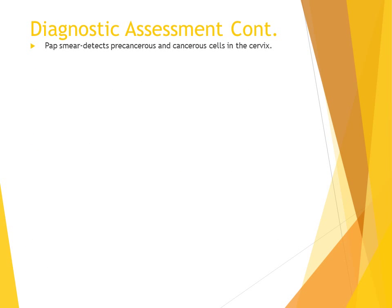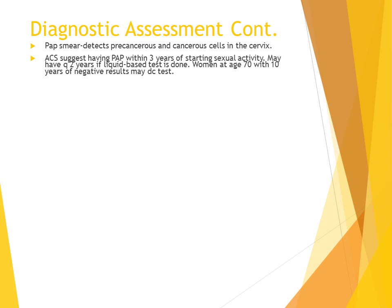Let's expand a little on the diagnostic assessments. A Pap smear detects precancerous and cancerous cells in the cervix. The American Cancer Society suggests having a Pap smear done within three years of starting sexual activity. You may have it every two years if it's done with the liquid base test. Women at age 70 who have had a negative test for 10 years can discontinue testing.